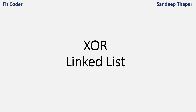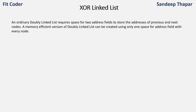Hi everyone. In this video I will discuss about XOR linked list. In an ordinary doubly linked list, each node requires two address fields to store the address of the previous and the next nodes. XOR linked list is basically a memory efficient version of doubly linked list which can be created by using only one space of address field along with every node.